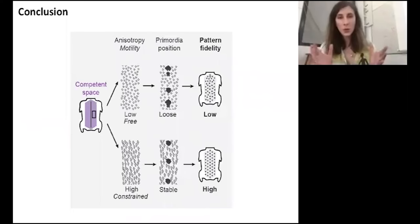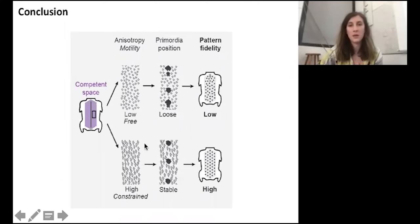To conclude, we showed that in species with natural or induced low anisotropy, cell motility is higher and it results in poor positioning of the primordia. In species with high cell anisotropy, dermal cell motility is lower and it results in precise positioning of primordia and therefore the formation of a high fidelity pattern. Finally, we demonstrate that an early supracellular property, the cell anisotropy, could modulate cell motility, a key morphogenetic event, and therefore constrain the tissue response to the self-organizing process to shape pattern fidelity.